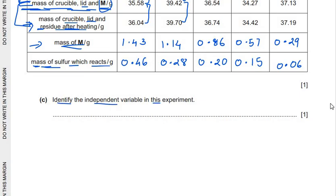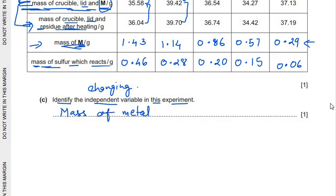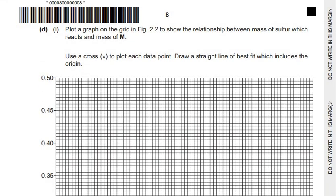The next question asks us to identify the independent variable in this experiment. The factor which we are changing is the independent variable. Each student is taking the same metal M but changing the mass of metal they have taken. So the independent variable is the mass of metal M, since each student changes the mass of metal taken for heating.